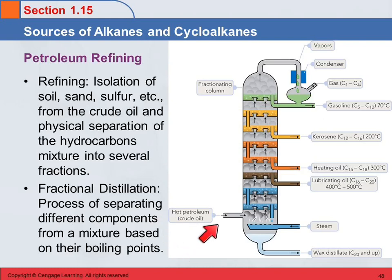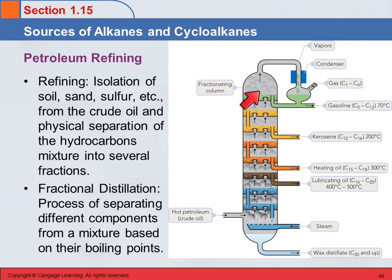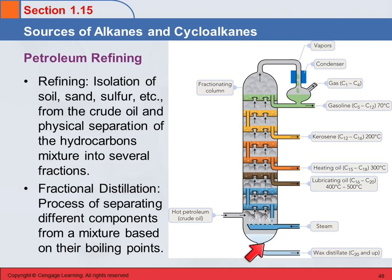So you bring the hot crude oil in and heat it more, and you're going to cause things to boil. This temperature is going to decrease as we go up. Some things are not going to distill out — things like waxes. Waxes are not volatile, so the wax distillate is what you get left after everything else evaporates.